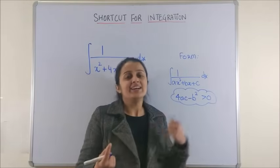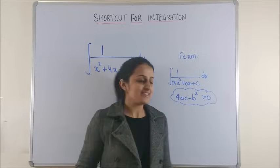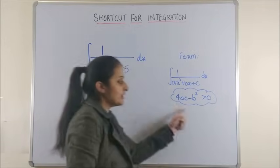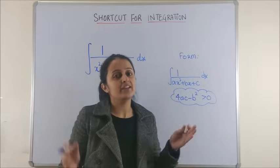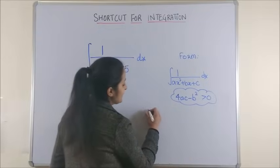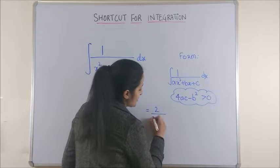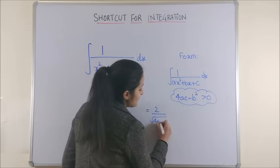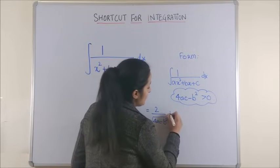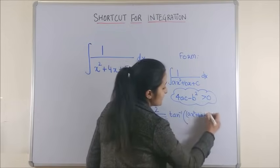Once you have checked for this condition, then your final answer is simply 2 upon square root of 4ac minus b square into tan inverse of derivative of this quadratic upon square root of 4ac minus b square plus c.